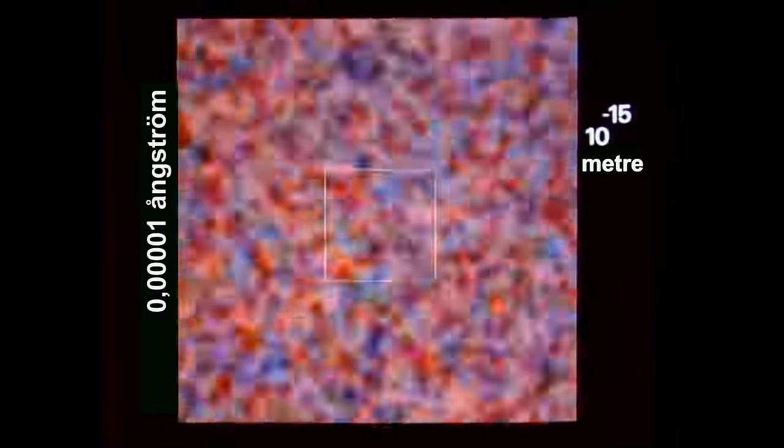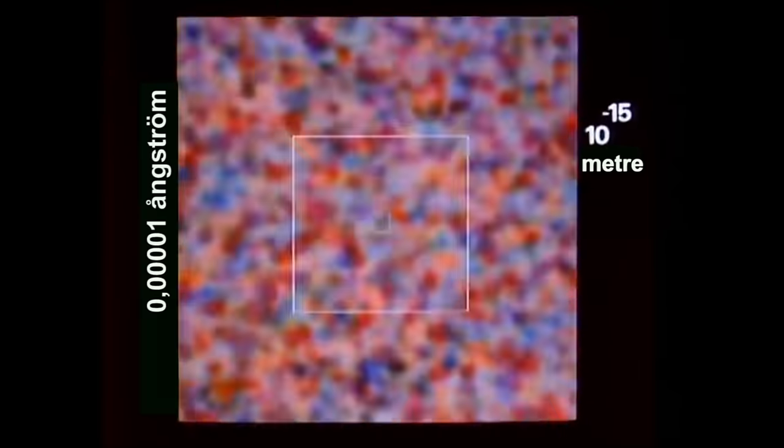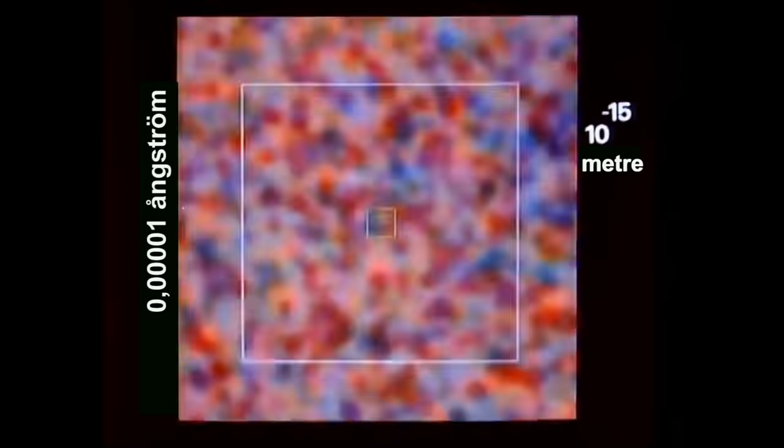Yolculuğumuz bizi onun 40 kuvveti boyunca götürdü. Şimdi eğer bu alan bir birimse, birlikte pek çok galaksi grubu gördüğümüzde bu onun 40. kuvveti oluyordu. Ya da bir ve yanında 40 sıfır diye de düşünebilirsiniz.